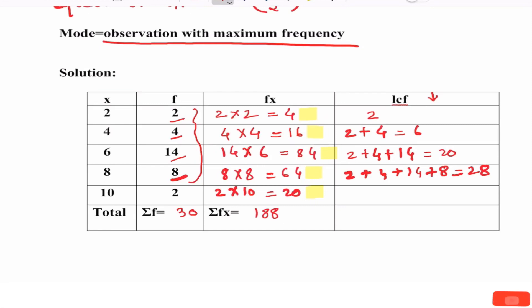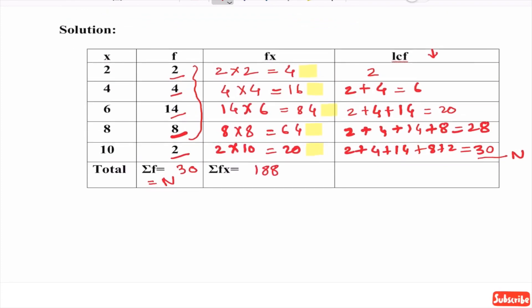Lastly, add all the frequencies, 2 plus 4 plus 14 plus 8 plus 2. Answer is 30. We can observe that sum f, total of f is 30 which we denote by capital N, which is the answer for last LCF. Counter check for correct answers.